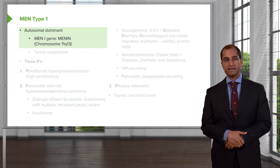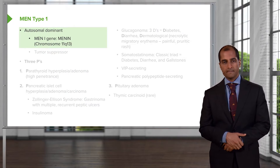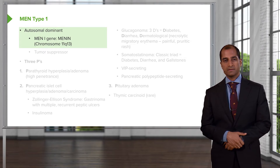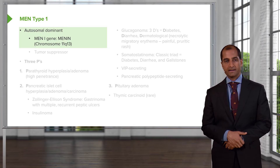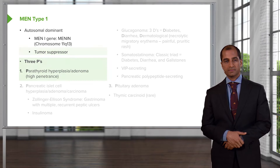First, we'll take a look at MEN type 1, multiple endocrine neoplasia type 1. Its gene that you must know is MEN1. Autosomal dominant; the tumor suppressor gene has been lost.